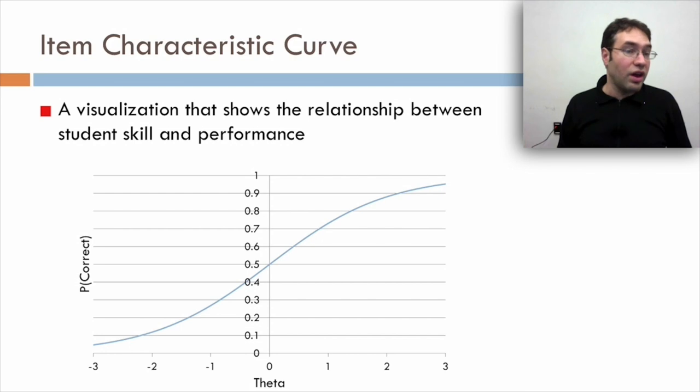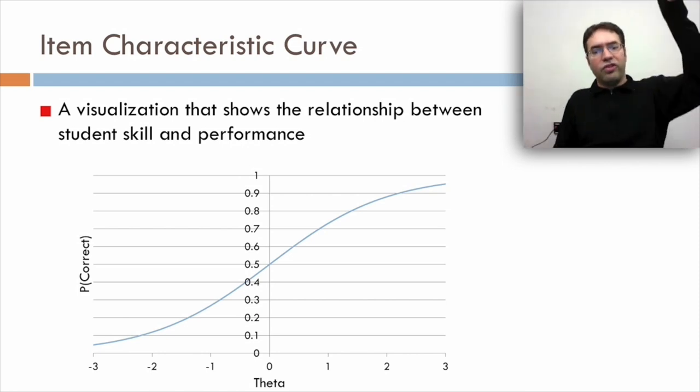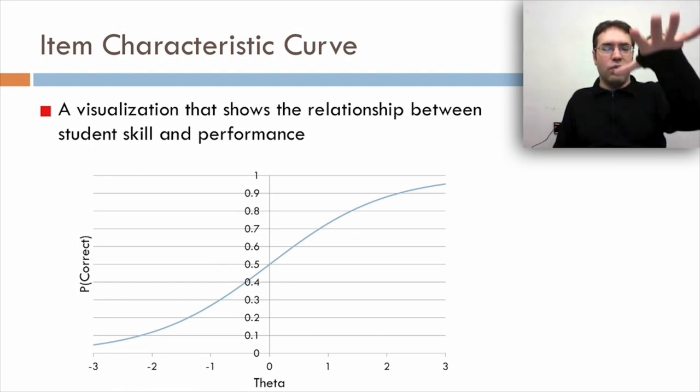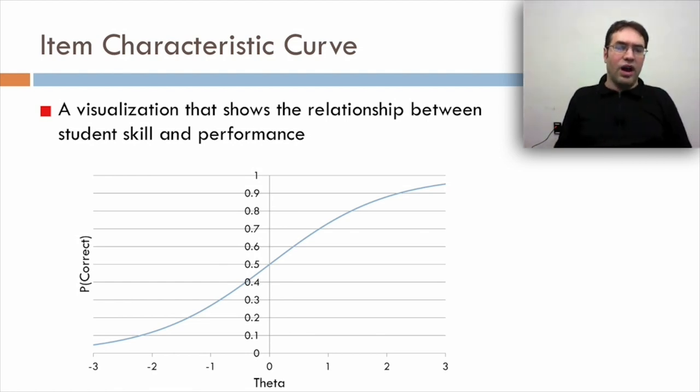In IRT, we can understand an item's difficulty by looking at, for that item, the relationship between student's skill and performance. As you can see on this graph, the x-axis is theta (student ability) and the y-axis is correctness. When theta equals zero for this graph, probability of correctness equals 0.5. This actually has to mean that b equals zero, because for P(correct) to be 0.5, theta and b have to be exactly balanced.